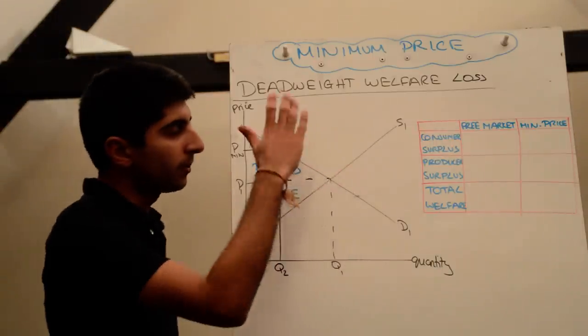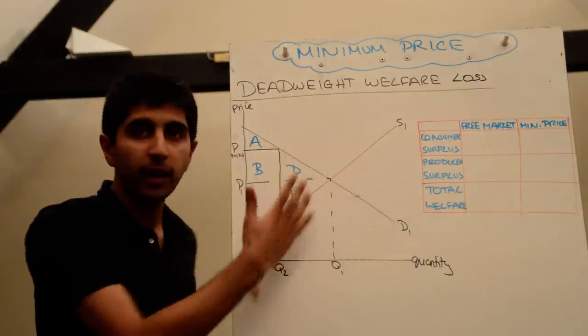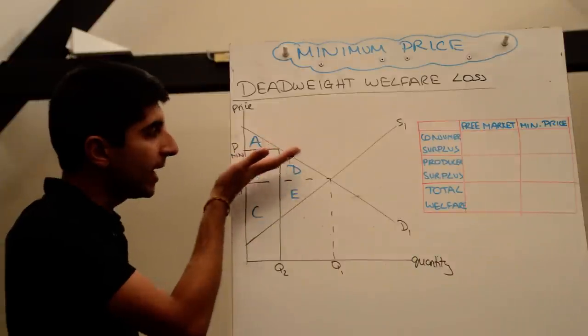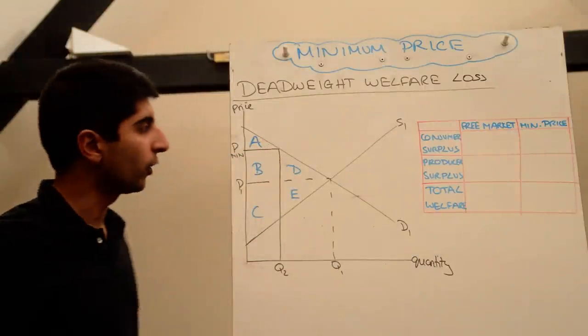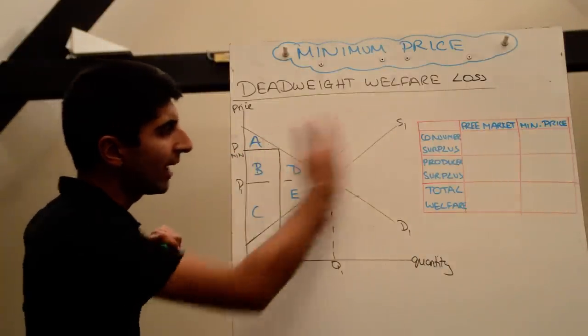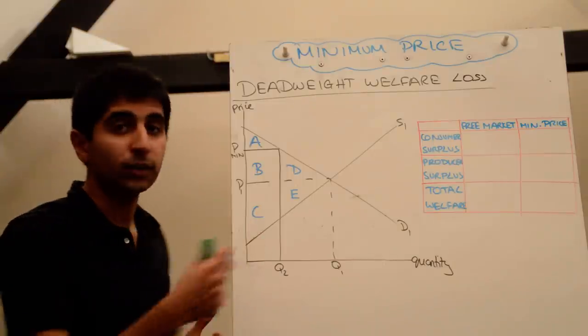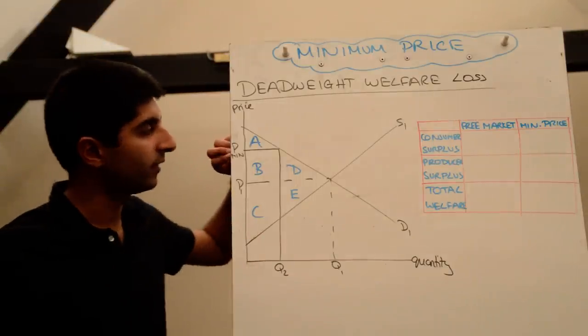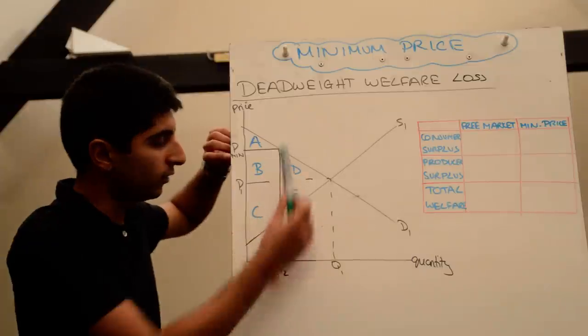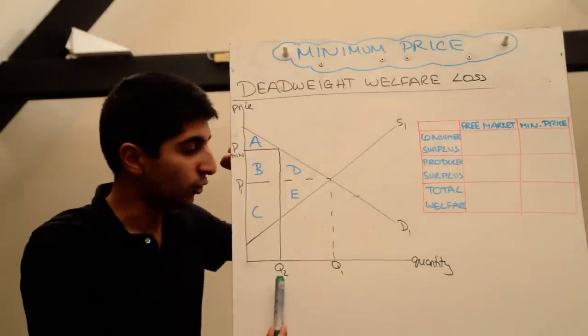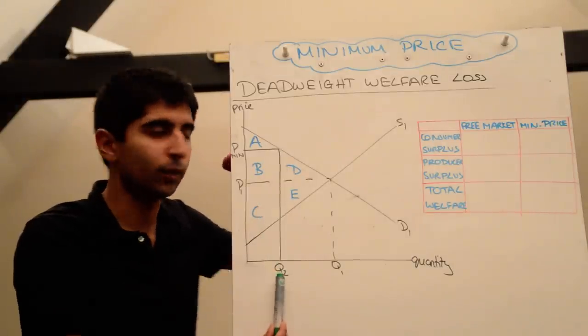Here is a market where demand equals supply initially and then the impact of a minimum price is also shown on here. Again I've not done the whole analysis, there's no need, I've only done what I need to show the effect on surplus outcomes. So let's say the minimum price is set at Pmin and that takes us to a quantity sold at Q2 and that's an important quantity for us to consider and work at.